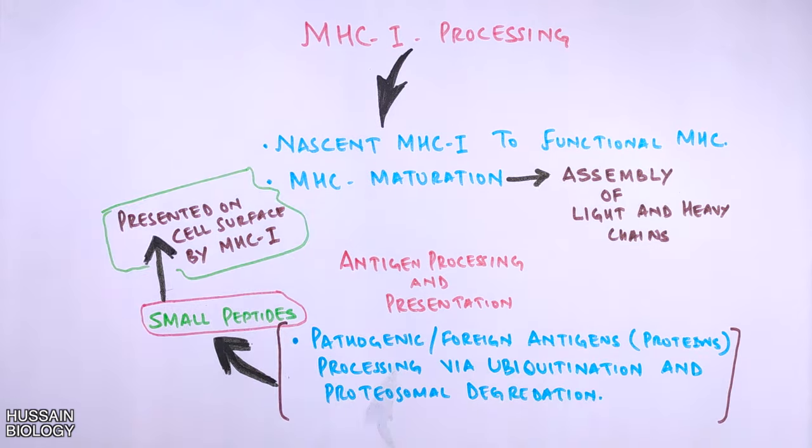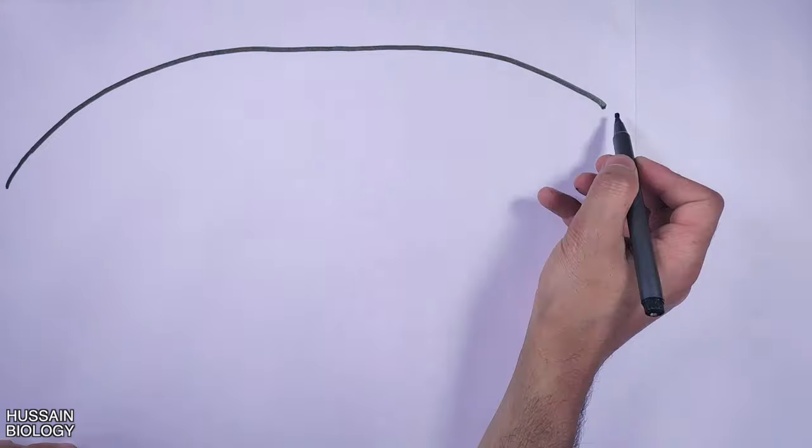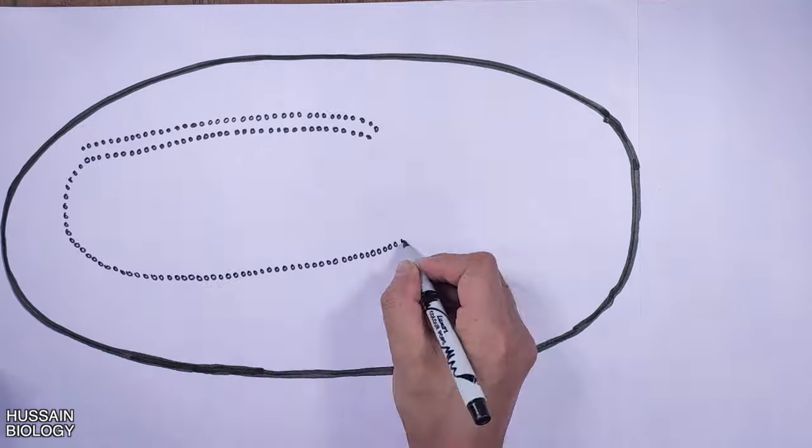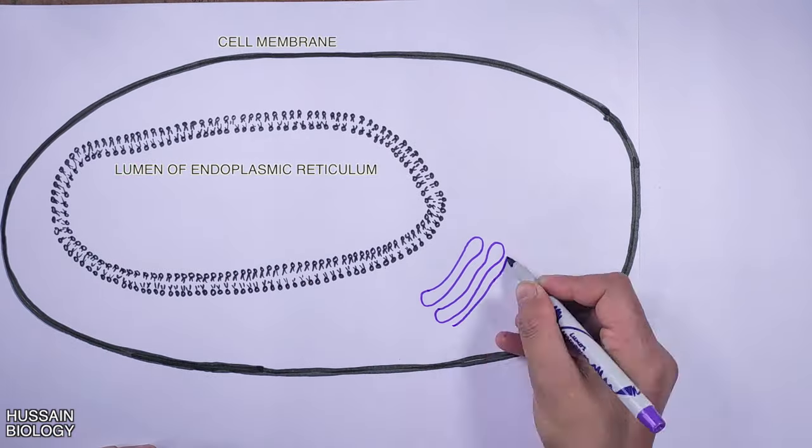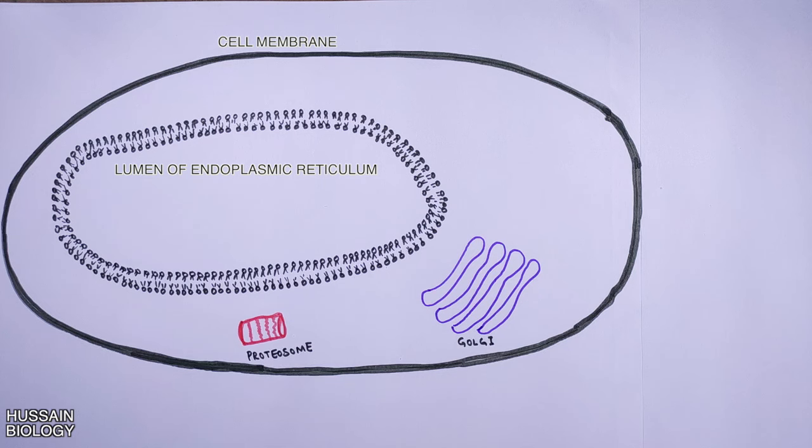Now let's see in detail how these events occur within the endoplasmic reticulum. In this diagram we have a cell with endoplasmic reticulum, Golgi apparatus, and proteasomes. The other organelles are not shown here because we have to deal with these organelles only.